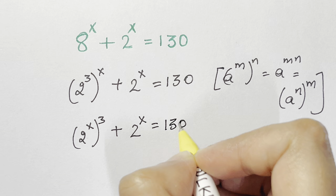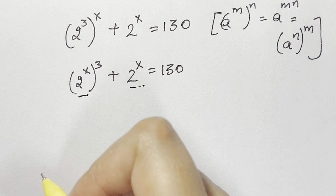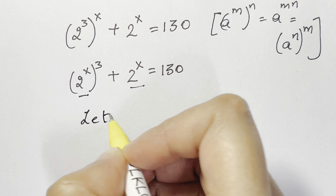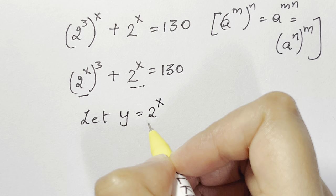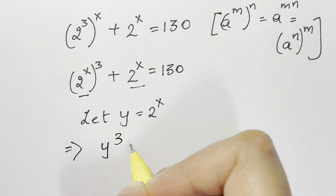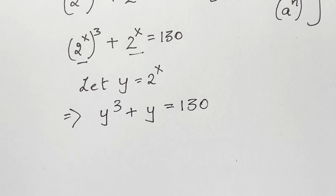As you can see, I have 2 to the power of x appearing twice. So I'll let y equal 2 to the power of x — that will make it easier to solve. So we have y cubed plus y equals 130. That's superb — we've got a cubic equation.